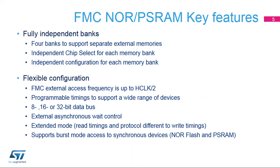The FMC controller offers four independent banks to support separate external memories. Each bank has an independent chip select and an independent configuration. Each bank features programmable timings, a configurable 8, 16, or 32-bit data bus, and can access memory in asynchronous or burst mode for synchronous memory such as NOR Flash and PSRAM. Synchronous memory can be accessed at a maximum frequency of HCLK divided by 2.